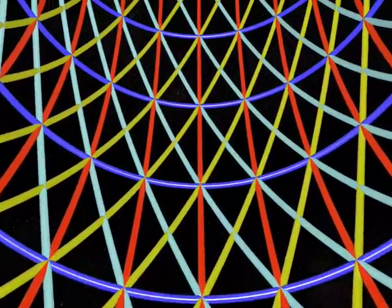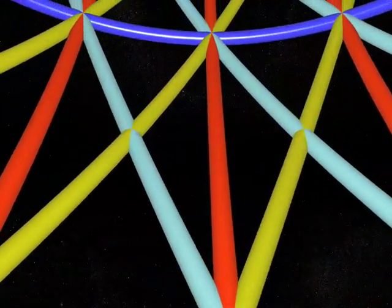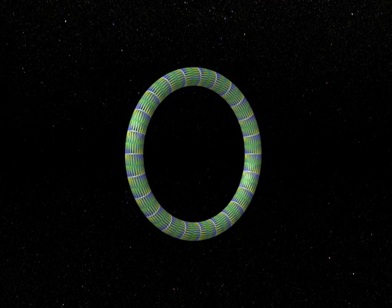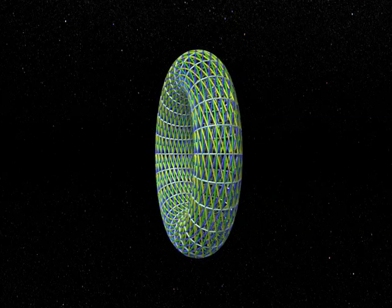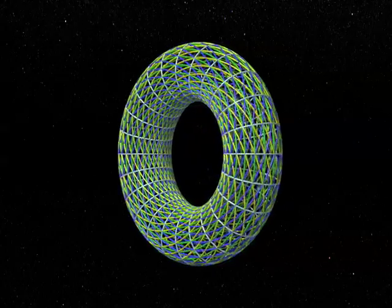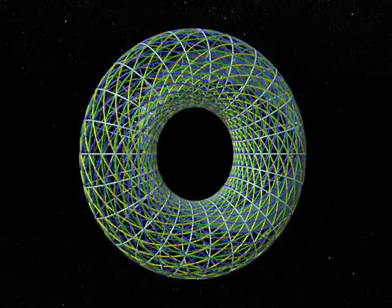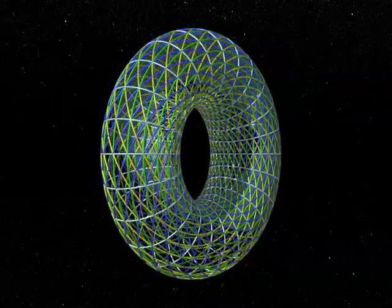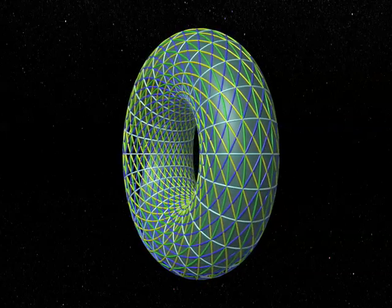And what about the white circles? Well, they are fibres of another Hopf fibration. The mirror image of the first one.